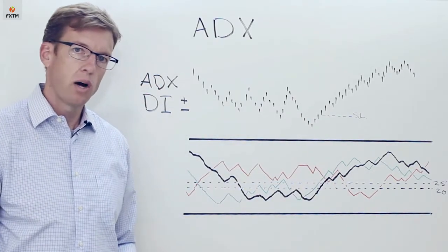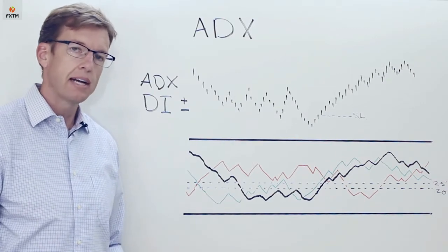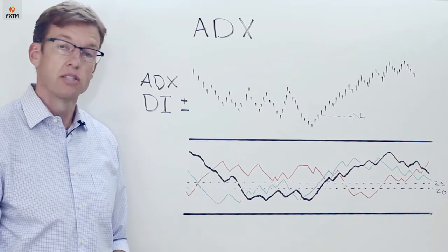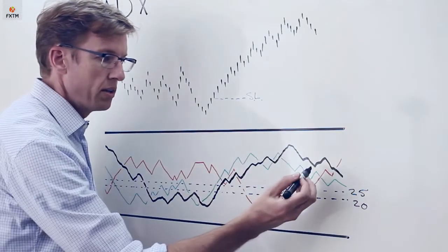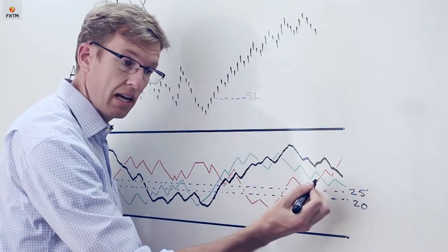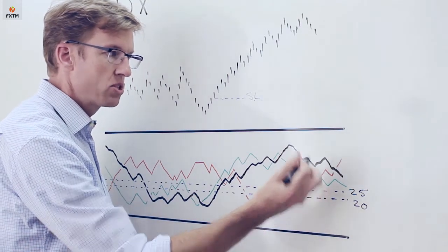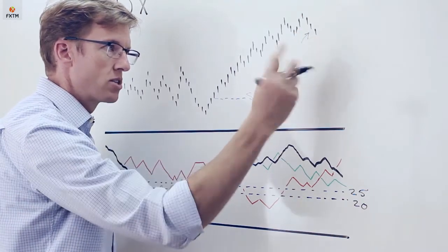Now initially, Wells Wilder suggested that a trader would at least consider an exit when the directional indicator lines crossed against their trade. So for example, we would look at this situation right here when the directional indicator positive crossed below the directional indicator negative as a potential time when the long position should be closed. Let's say that that was occurring somewhere in this region right there.